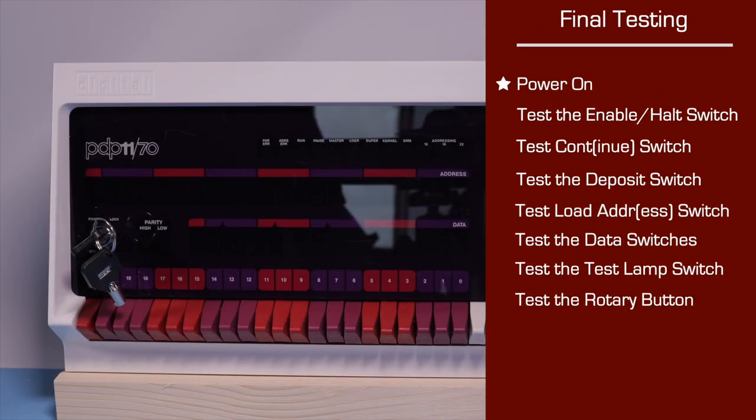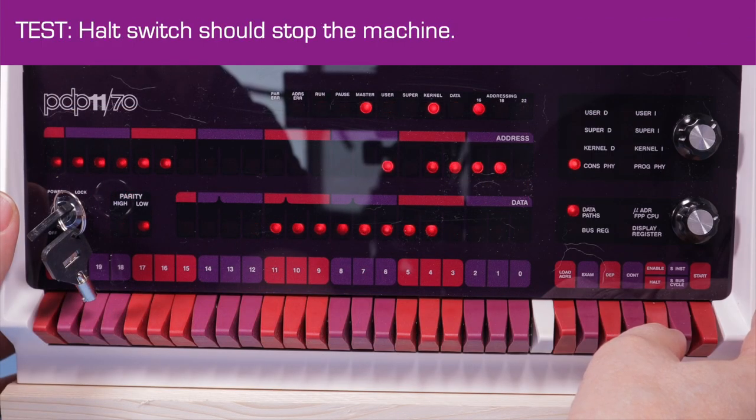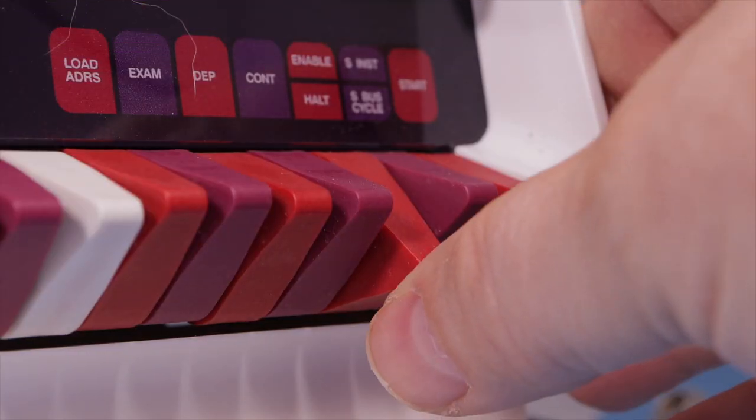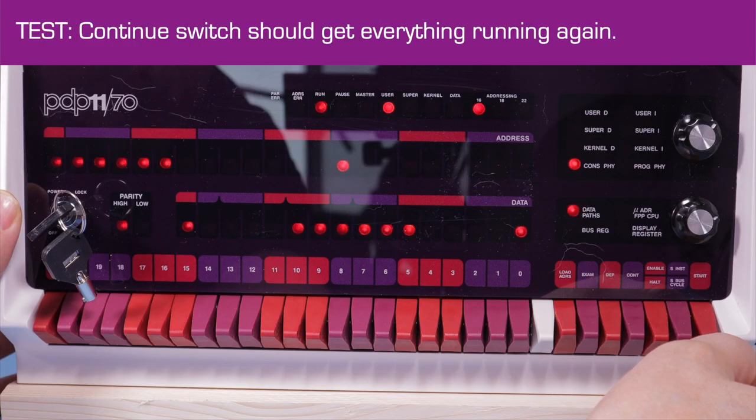Power on! A few seconds pass before the boot completes and the lamps come up. Time to test the switches. Flip the halt switch down. That should stop the machine. If it does, then the switch checks out. Move the switch back up. Then toggle the continue switch. If everything starts moving again, you're doing well.